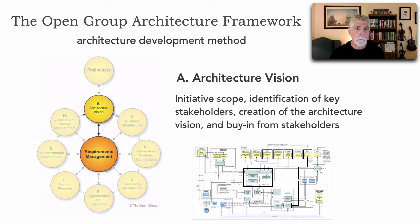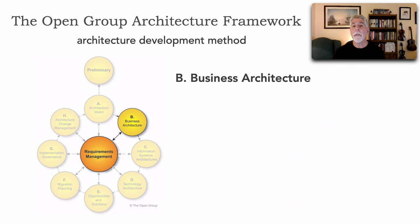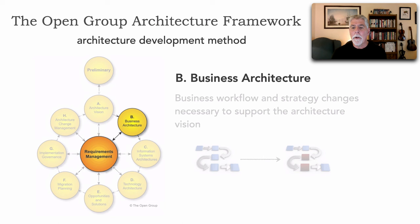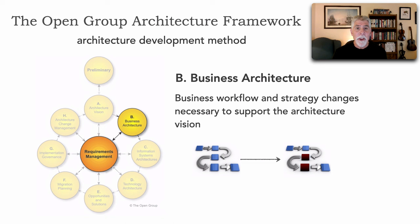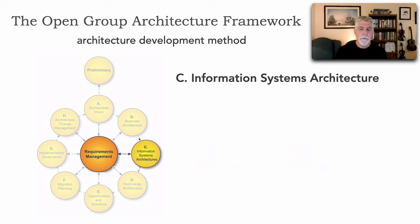These are Phases B, C, and D. One thing I like about TOGAF is it separates the business from data from technology. Phase B is the Business Architecture. This describes any possible workflow changes, organizational change, and strategies necessary to support our architecture vision. Sometimes a transformation or application modernization changes business workflows and team topologies — the structure of our teams. That's where all this business architecture change would be identified.